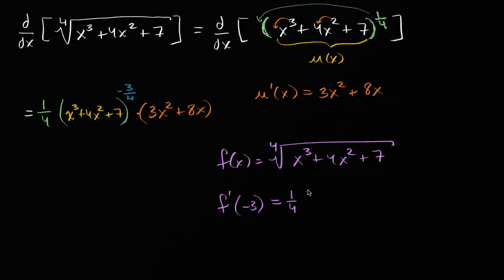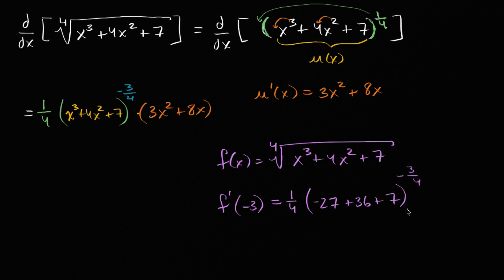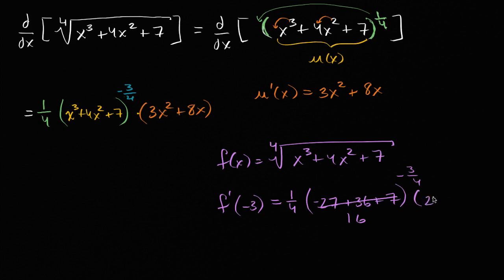So it's one-fourth times — let's see — negative 27, plus 36, plus seven to the negative three-fourths. Negative 27 plus seven is negative 20, plus 36, so this is 16. And then three times nine is 27 minus 24, which gives us three there.